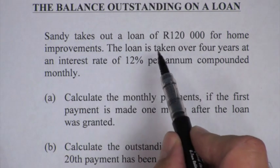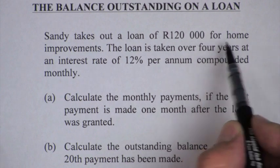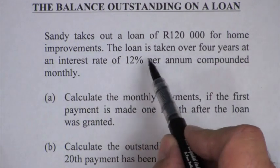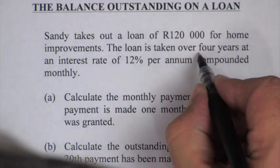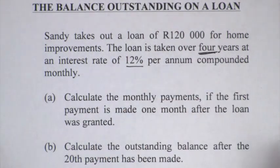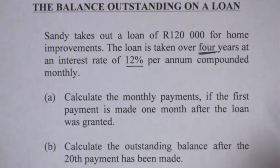Sandy takes out a loan of 120,000 for home improvements. The loan is taken over a four-year period at an interest rate of 12% per annum, compounded monthly.